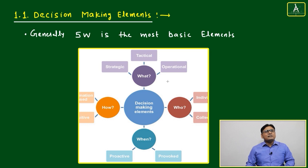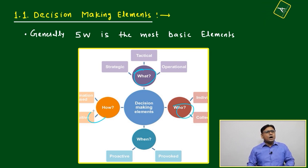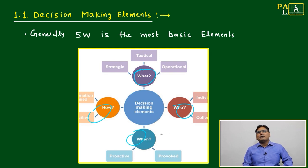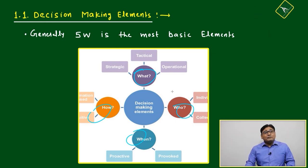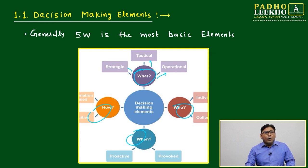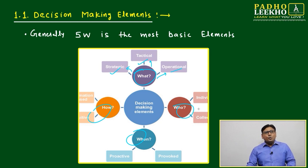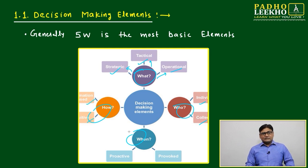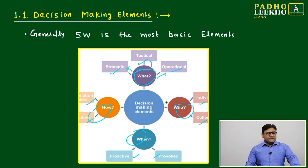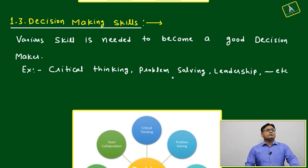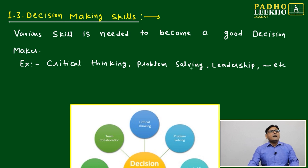Similar way, when you discuss the elements of decision-making, it is fundamental — 'bacha' type: what, who, how, when, where. But afterwards, you have to very carefully decide: what are the factors, who is going to affect, how they are going to affect, when it may happen. So decision-making elements are a just very fundamental process.